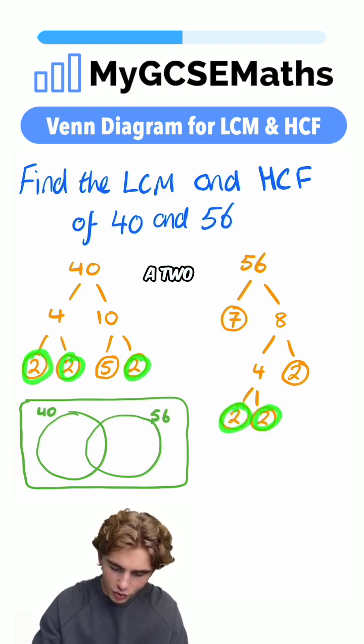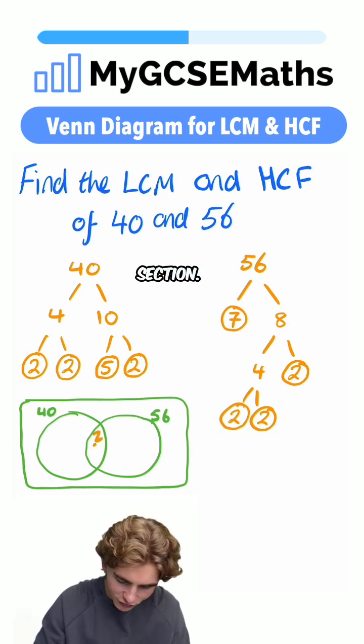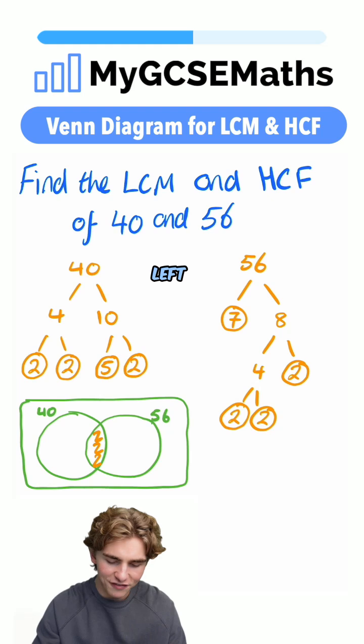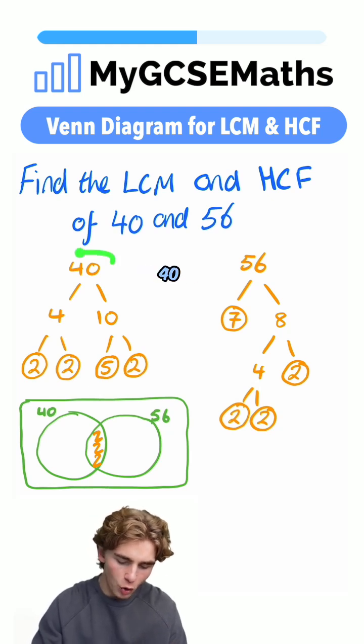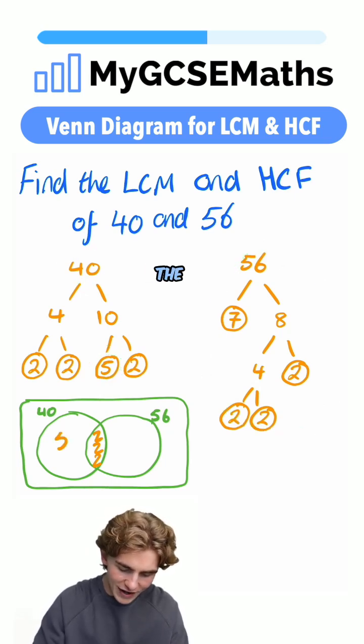Here we have a two, a two and a two. So we're going to write three twos in our middle section: two, two, two. And then on our left-hand section, what are we going to have? We can see that 40 has a factor of five, but 56 doesn't have a prime factor of five. So we're going to write that in the left.